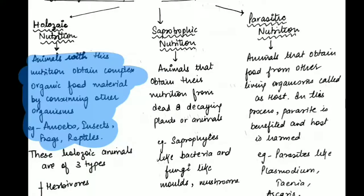Similarly, in carnivores, the example is a lion or tiger. They eat the flesh of another animal — for example, a tiger eats the flesh of a deer. So that falls under the holozoic mode of nutrition.